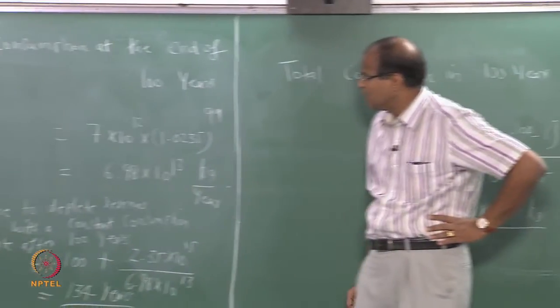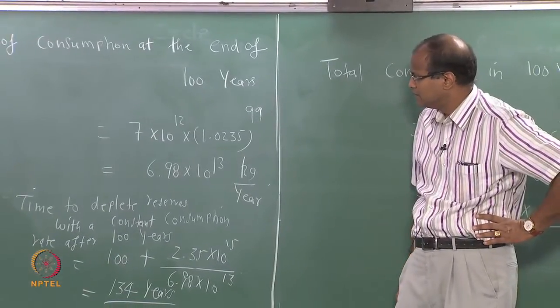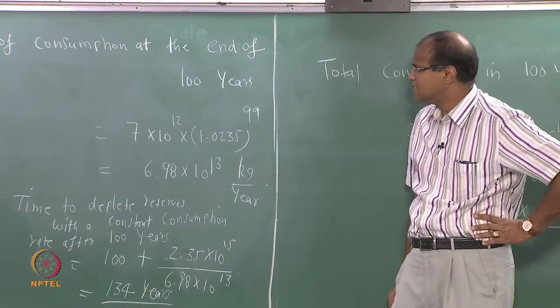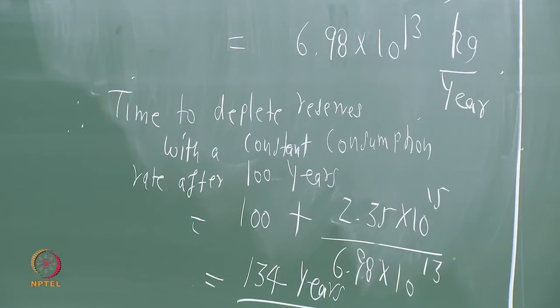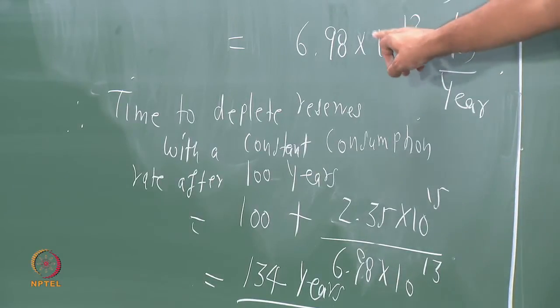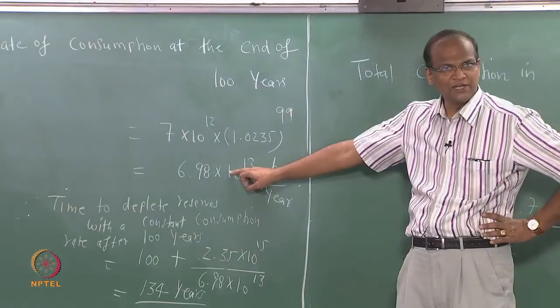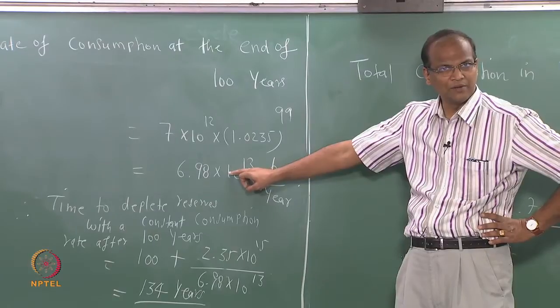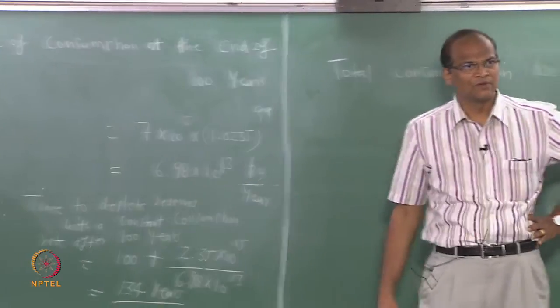The consumption rate has become 6.99 × 10¹³ kg, that is approximately 69 × 10¹² — so it is around 10 times the original.